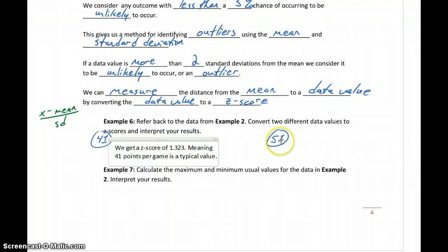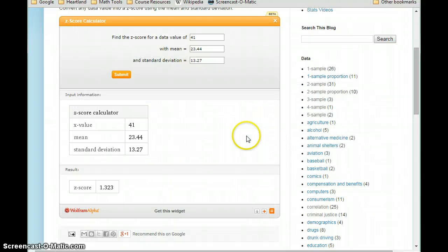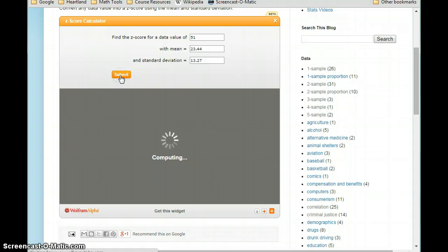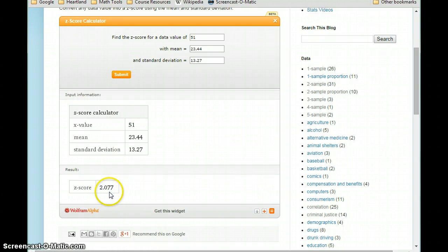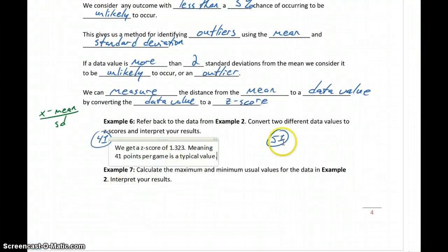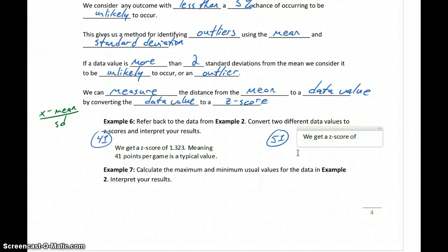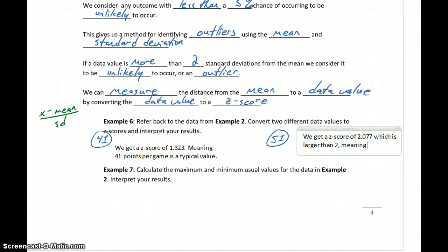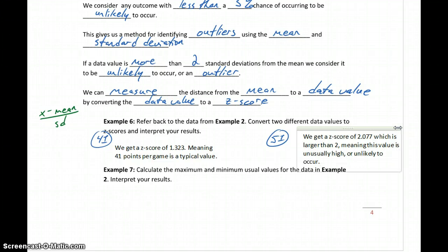Now let's do the same thing with a data value of 51. Coming back to the calculator with the same mean and standard deviation, we just change the data value to 51 and click submit. In this case we get a z-score of a little over 2 — 2.077. Since 2.077 is larger than 2, this number of points per game is unusually high, or unlikely to occur, so we have an outlier.